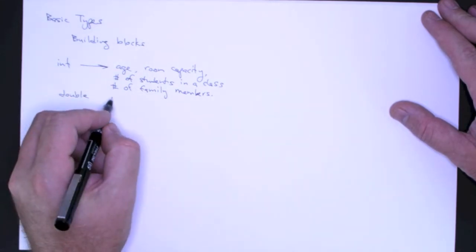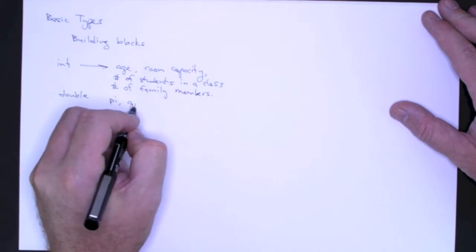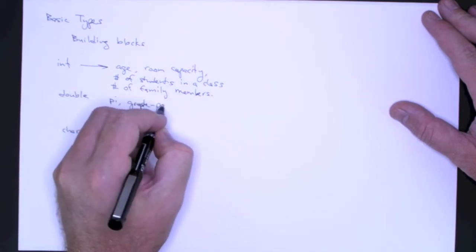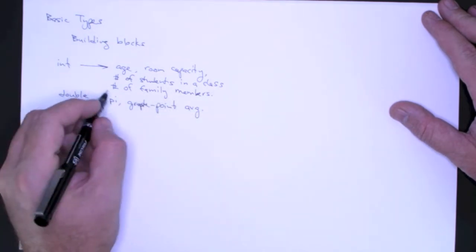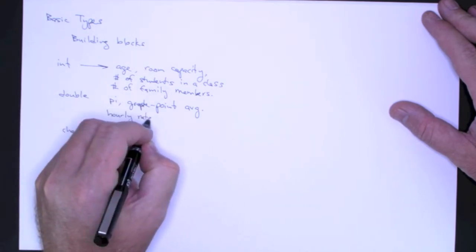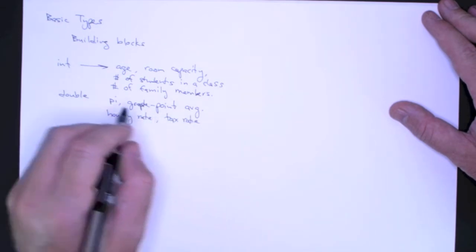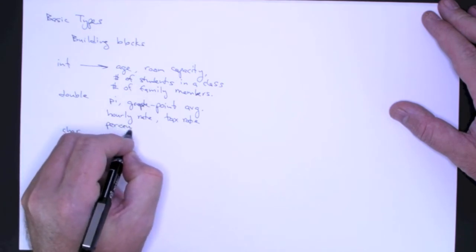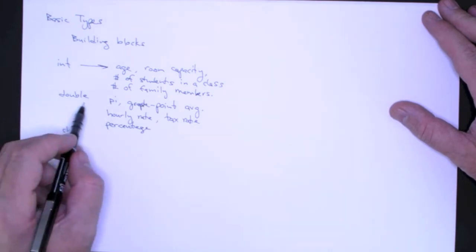On the other hand, double. We can use double for mathematical quantities like pi, other constants, grade point average, your hourly rate if you have an hourly job, the tax rate that you're going to pay on items, and any kind of a percentage, any kind of a probability, anything with a fractional portion.